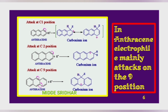When the electrophile attacks on alpha and beta positions, anthracene changes into a carbocation attached to naphthalene. But when the electrophile attacks on the gamma position, it changes into a carbocation with two benzene rings, and we know that two benzene rings are more stable than naphthalene. So in anthracene, the electrophile preferably attacks on the 9th or 10th position.